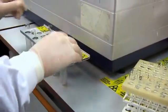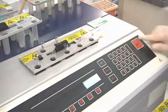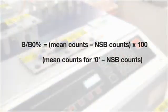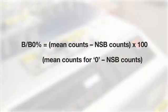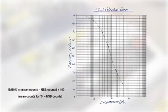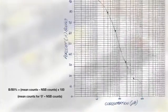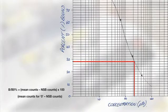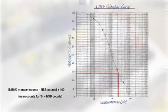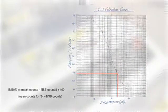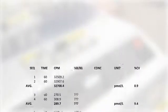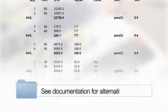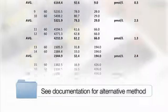Calculate percentage binding of each calibrator, control or sample by following this equation. Prepare a calibration curve on semi-log graph paper plotting B over B0 against 125D concentration and read the concentration samples from the curve. Alternatively, use an appropriate data reduction technique. Smoothed spline or 4PL curve fits.